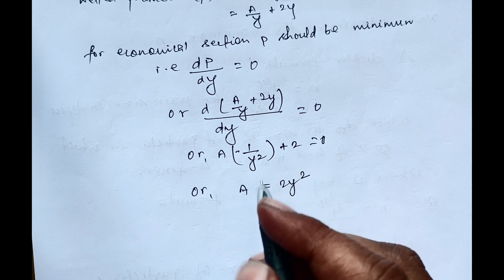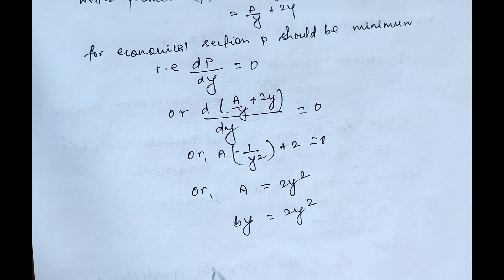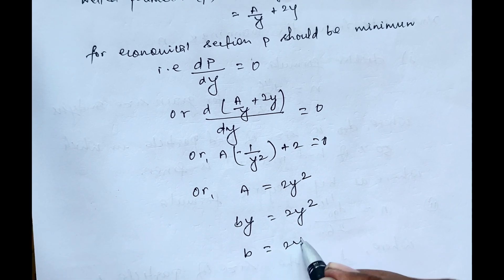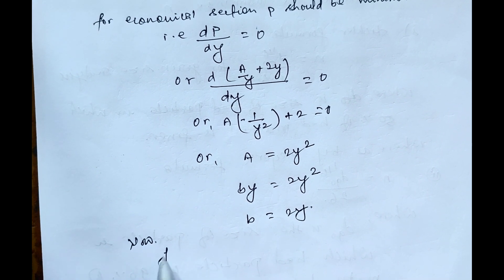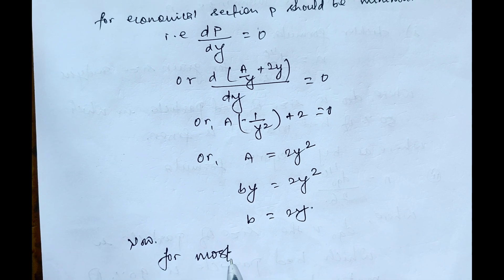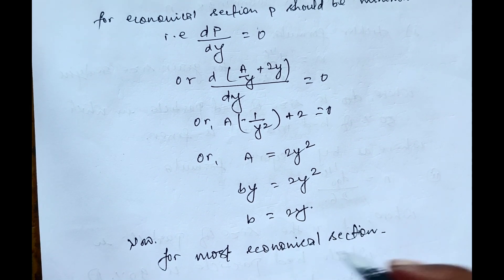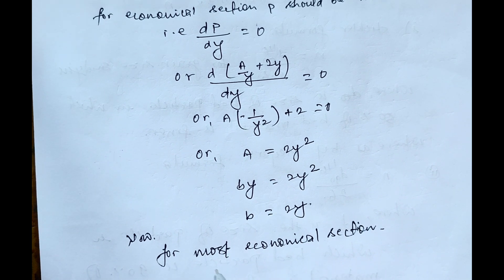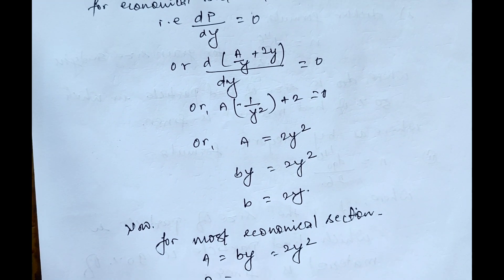Since A equals By, we have By equals 2y squared, which simplifies to B equals 2y. So for the most economical section, A equals By equals 2y squared.